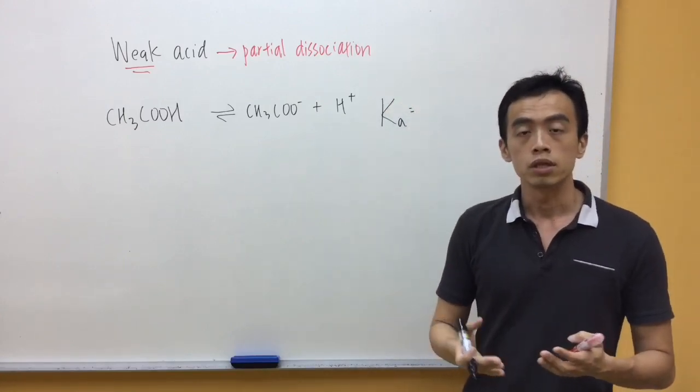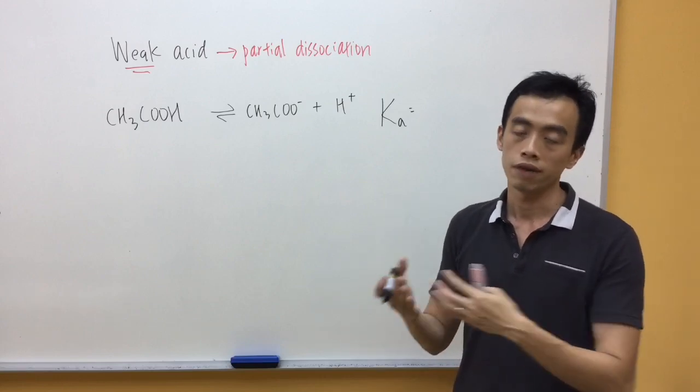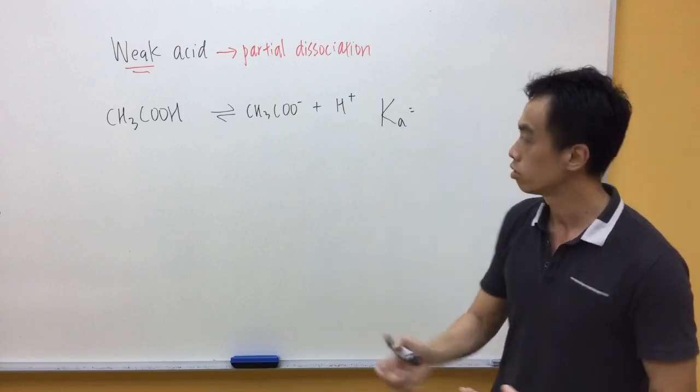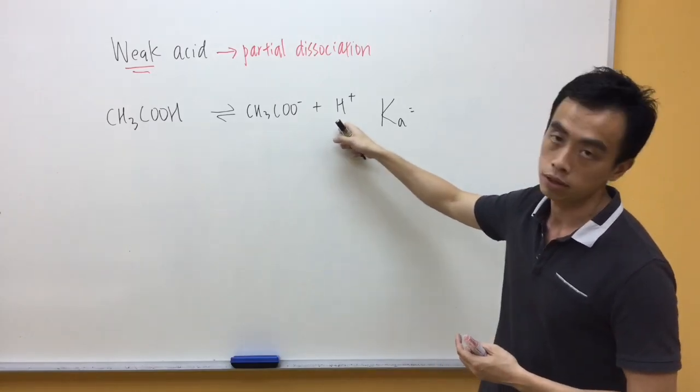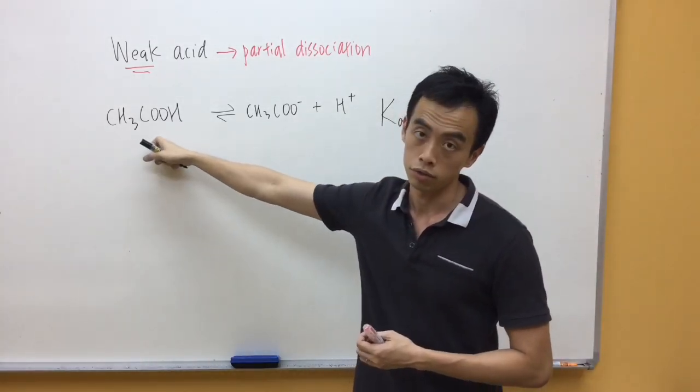Ka will just be the concentration of the product divided by the concentration of the reactant. So, it has to be CH3COO- concentration, multiplied by H+ concentration, divided by CH3COOH concentration.